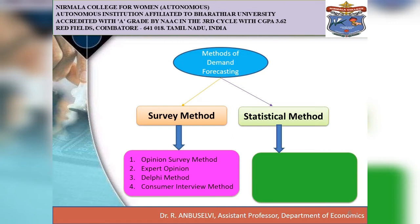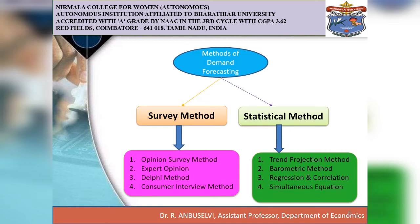The second important broad category of demand forecasting methods is statistical methods. Statistical methods are used for long-term demand forecasting. In this method, statistical and mathematical techniques are used to forecast the demand, relying on past data collected by producers and their experts. Statistical methods can be further classified into four types: trend projection method, barometric method, regression and correlation method, and simultaneous equation method.